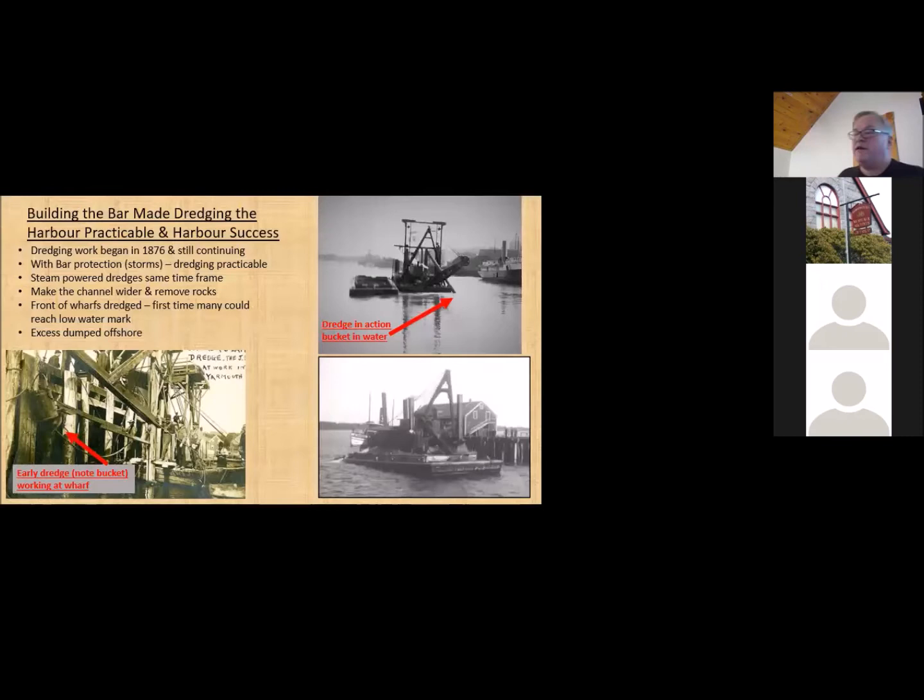The other thing that building the Yarmouth Bar made practical was it made dredging practical in Yarmouth Harbor. At the same time as the bar was built, we started getting our first smaller steamships. We started getting a couple steam-powered tugboats in Yarmouth Harbor, and you got these steam-powered dredges. So building the bar made dredging the harbor practical. Because without it, there was no sense dredging it - more stuff was going to be swept in there next storm. The dredging work in Yarmouth Harbor started in 1876 and continued throughout the years. Every three years, they worked on improving the harbor. They'd dredge that stuff up, put it in a barge, tow it offshore, and dump it.